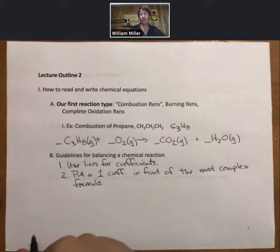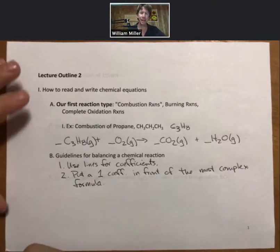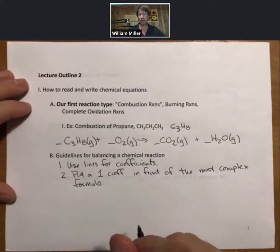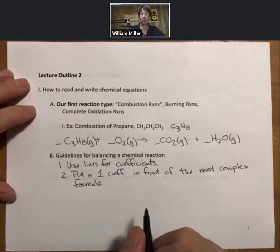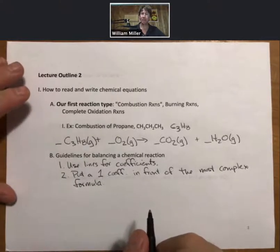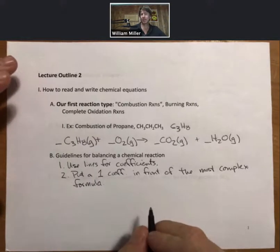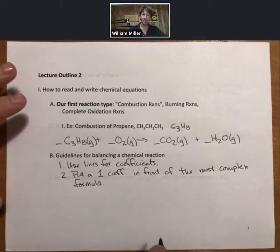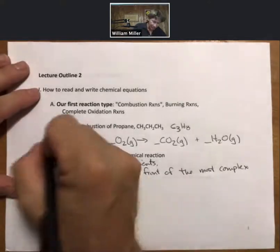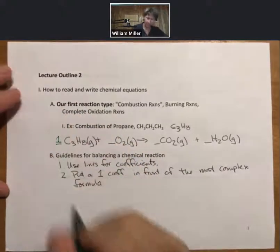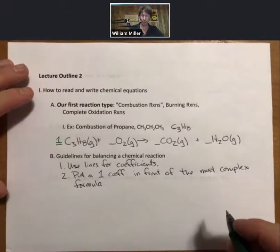And most complex typically means most numbers, number of atoms, and most number of elements. Either of those, either combination. And should you try to balance a reaction and you find that it's difficult, you can start over and try a different choice for your most complex formula. Because in the end there is only one set of numbers that will work. I'm going to put that my most complex formula is my propane. That is very much the case for combustion.